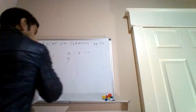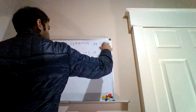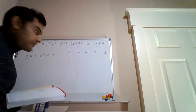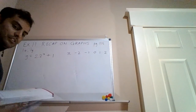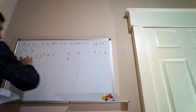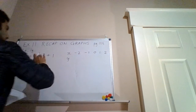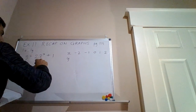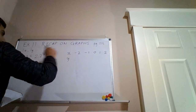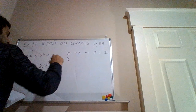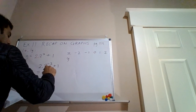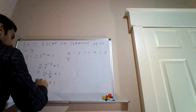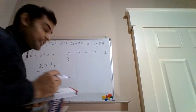My x-values will be: negative 2, negative 1, 0, 1, 2. Now for the y-values, I'm just going to substitute each x-value into the equation. Doing the first one: substituting x equals minus 2 gives 2 times 2 to the power of minus 2, plus 1. Since 2 to the power of minus 2 is a quarter, we have 2 times a quarter plus 1, which is a half plus 1, which is 3 over 2.